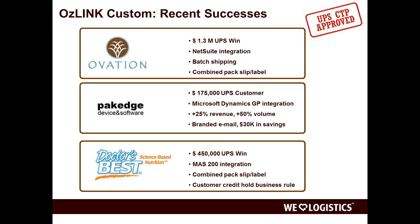The solution we're going to talk about mostly today is called OzLink Custom. There are four different solutions within the OzLink for UPS family. We have front office rating tools, and integration-to-WorldShip tools. OzLink Pro integrates WorldShip out of the box with NetSuite and QuickBooks. OzLink Custom can integrate to over 20-25 different hosts and provides the WorldShip extensions we'll discuss today.